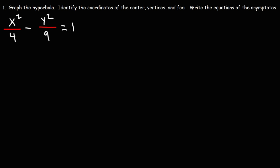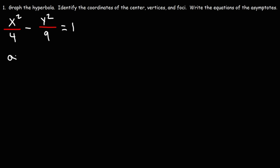Number one: graph the hyperbola, identify the coordinates of the center, vertices, and foci, and write the equations of the asymptotes. A squared is going to be under the variable that has a positive coefficient, and the one with the negative sign is associated with b squared. In this problem, a squared is the number under x squared, so a squared is 4 and a is 2. B squared is 9, and b is 3. With this information we can draw a graph. The center is at the origin for this problem.